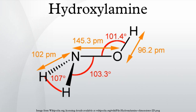Solid NH2OH can be collected by treatment with liquid ammonia. Ammonium sulfate, (NH4)2SO4, a side product insoluble in liquid ammonia, is removed by filtration. The liquid ammonia is then evaporated to give the desired product.